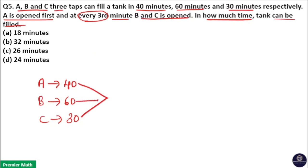So take the LCM of 40, 60 and 30. Here LCM of 40, 60 and 30 is 120. Now 40 goes three times in 120, 60 goes two times in 120, 30 goes four times in 120.